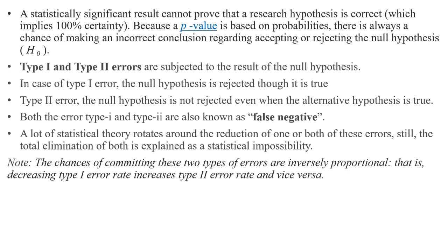In the case of Type 1 error, the null hypothesis is rejected when the null hypothesis is correct. In Type 2 error, the null hypothesis is accepted even when the alternative hypothesis is correct. There are many statistical theories focused on reducing both of these errors, but the total elimination of both errors is statistically impossible.